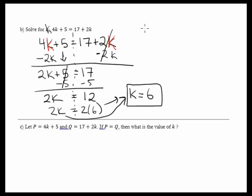And we could check our work. Let's check our work for here. So we have k equals 6. So we have 4 times 6, plus 5. Is it equal to, I put a question mark, I'm checking, I don't know if it's equal or not. 17 plus 2 times, and what was our value for k? It was 6.